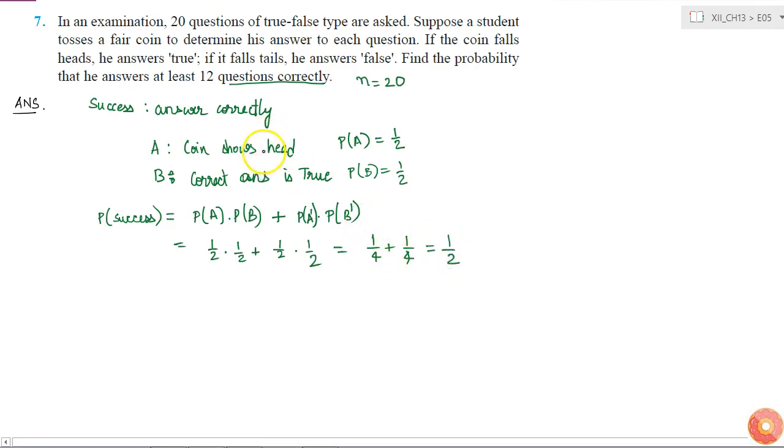In this question, we find that the probability of success and failure are equal. But if the coin was not a fair coin, or the probability of correct answer was not exactly half, you might not get this result. So we should always be careful that we are finding the probability of success in the proper way.